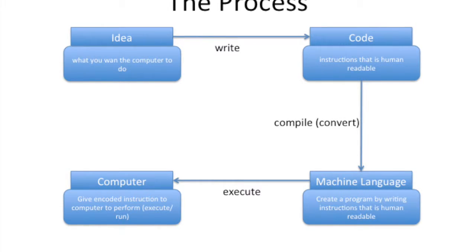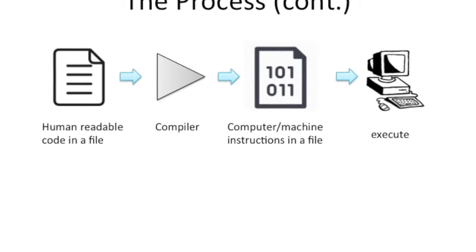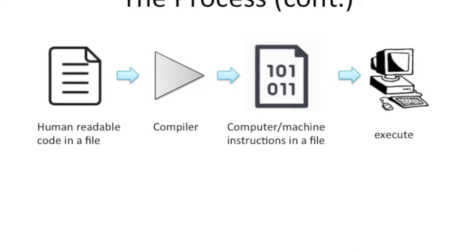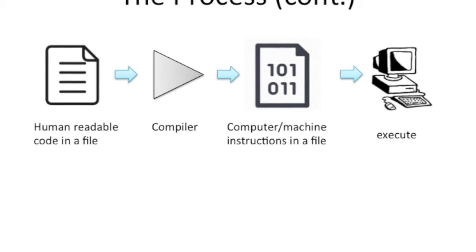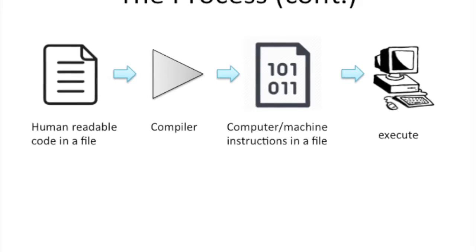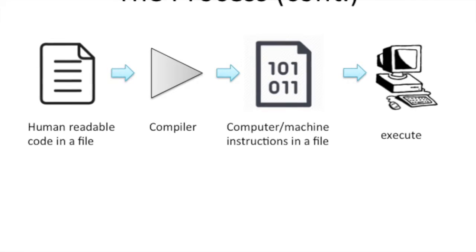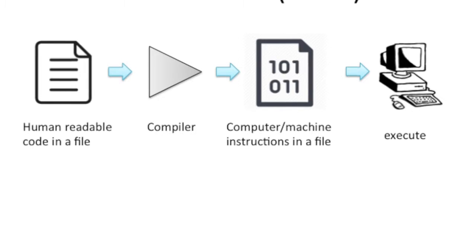If you fed the computer your source code it wouldn't know what to do with it, but if you fed it machine code then it knows what to do. As you can see from the diagram here, there are these steps: you write the code, you have a plan, you write the code, you feed it to a compiler, the compiler produces a binary file — which is the zeros and ones — and then you take those zeros and ones, feed it to the computer, and the computer executes it.